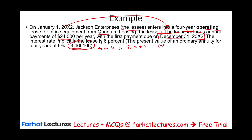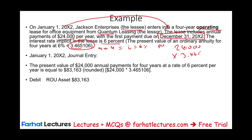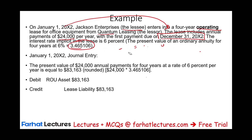Now let's journalize the entry. First, we need to record the asset and the liability. We take the annual payment of $24,000 times the present value factor of 3.465, giving us an asset worth $83,163. We debit the right-of-use asset and credit the lease liability for $83,163, putting both the asset and the liability on the books. The asset represents our right to use the property, and the liability is our obligation to make the payments.